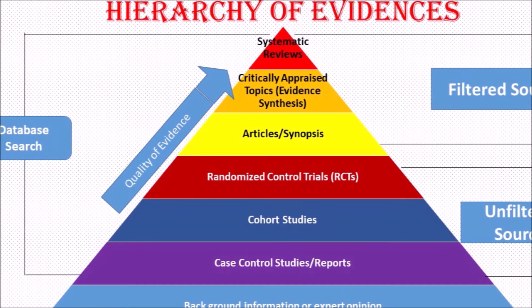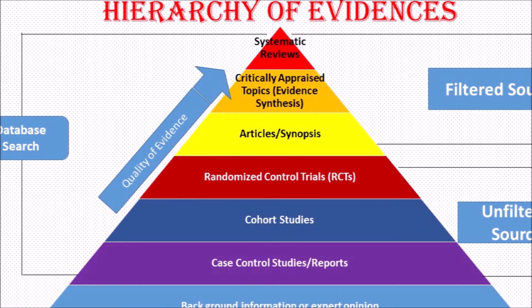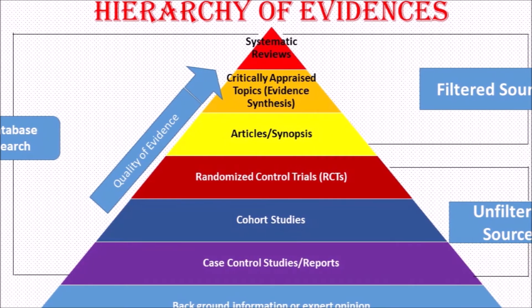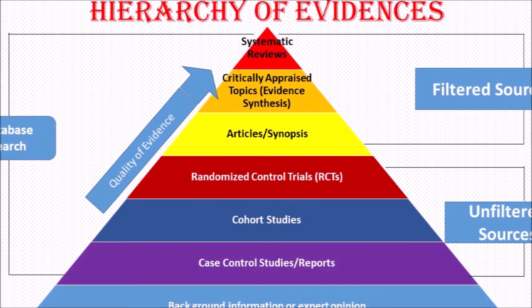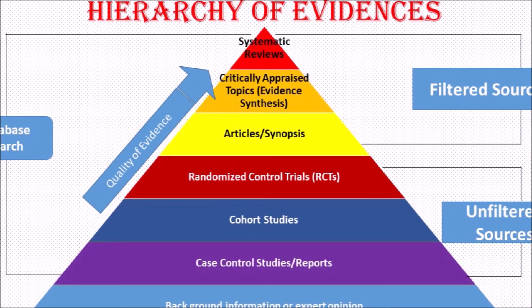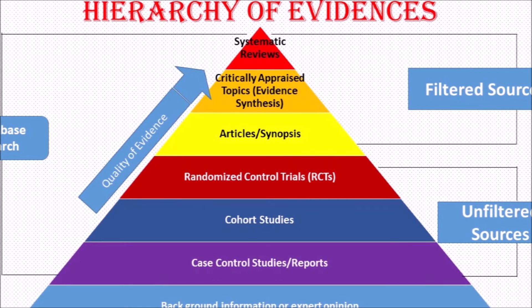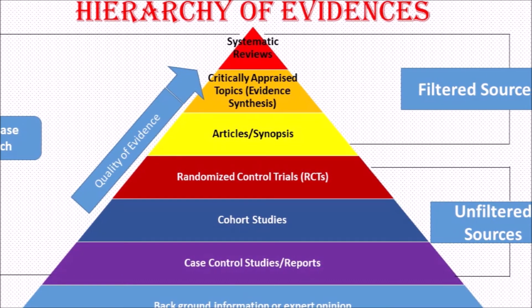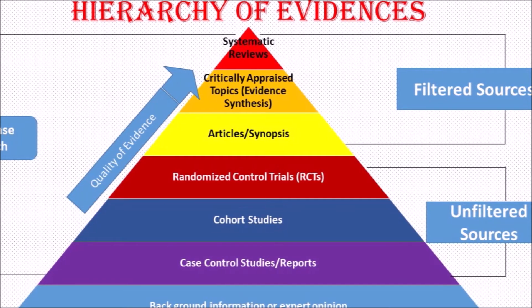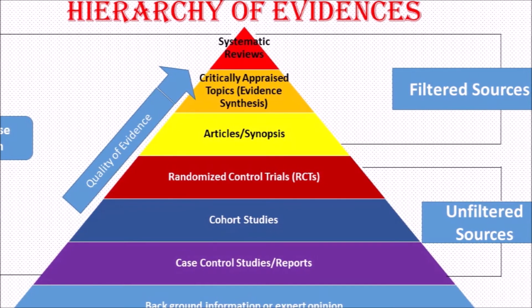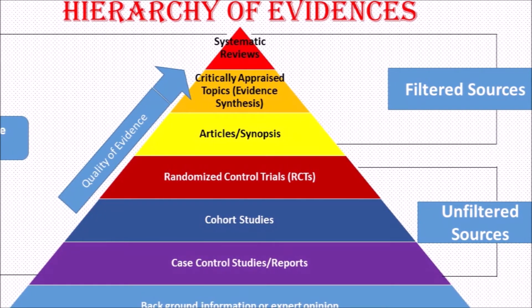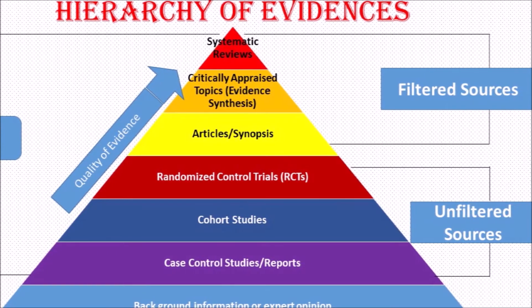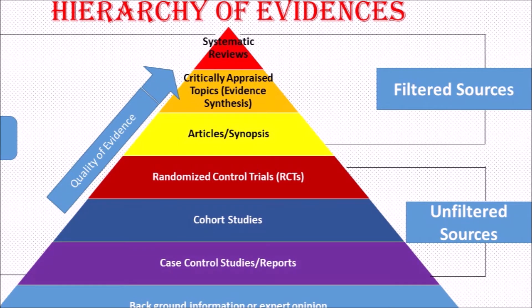First, we search background information or take expert opinion about what we want to do. Then we go for unfiltered sources — that is research studies, including literature review, case control studies, and case reports. Then cohort studies and randomized control trials. If we need more information, we go for filtered sources — that is articles, critically appraised topics, and systematic reviews. This is what we call the hierarchy of searching evidences.